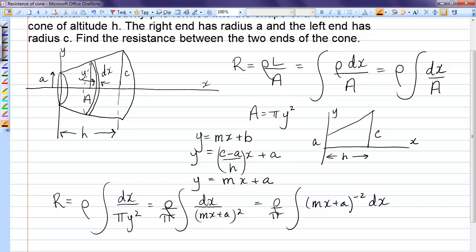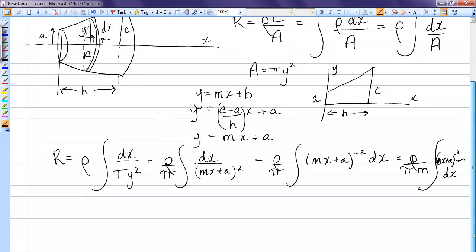That is a standard polynomial integral. However, in order to integrate that, I need an m in the integral. So I'm going to have to pull an m out of the integral on the bottom. And then I still have the (mx + a) to the minus 2 and an m inside, times dx. So let's carry out this integral. We have ρ over πm, and it's just a standard form. We have (mx + a) to the negative 1 divided by negative 1, evaluated from 0 to h.